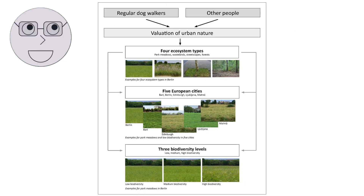The visuals show examples of each type of biodiversity, such as DNA strands for genetic diversity, different species of animals for species diversity and different ecosystems for ecosystem diversity.